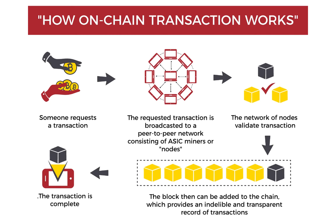For an on-chain transaction to be complete, there has to be an agreed number of confirmations and it needs to be approved. Sometimes transactions are delayed if there are a large volume of transactions waiting to be approved. If you want a transaction to complete faster, you can do this by paying a higher fee.